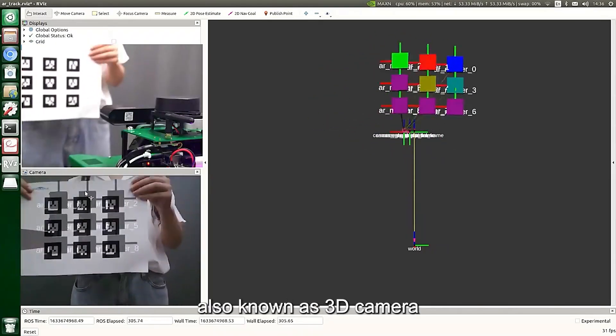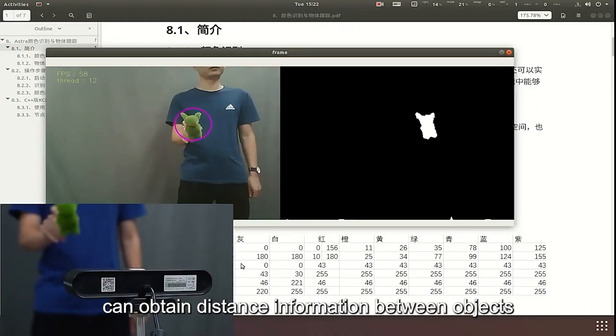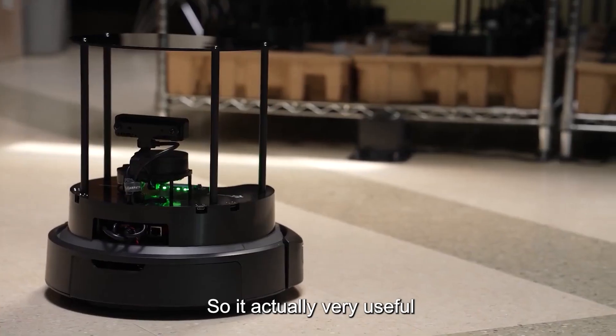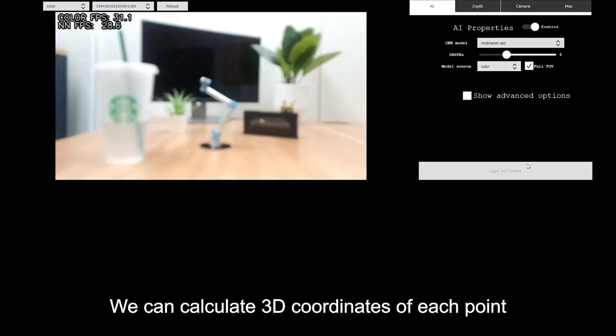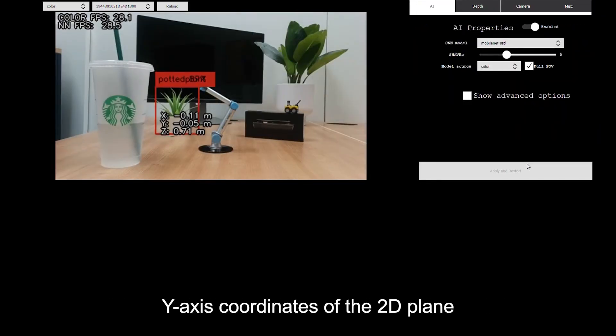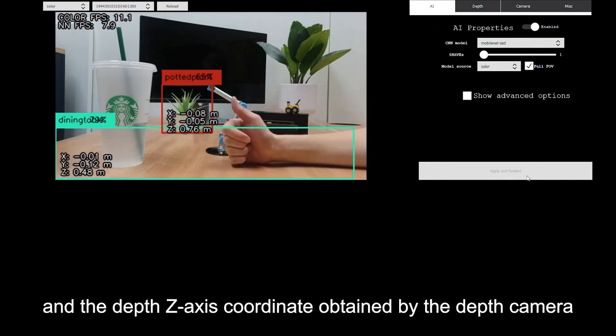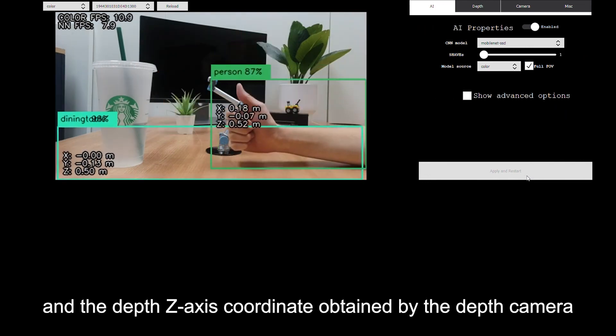Depth camera, also known as 3D camera, can obtain distance information between objects and the camera, so it is very useful. We can calculate 3D coordinates of each point in the image by adding the x, y-axis coordinates of the 2D plane and the depth z-axis coordinate obtained by the depth camera.